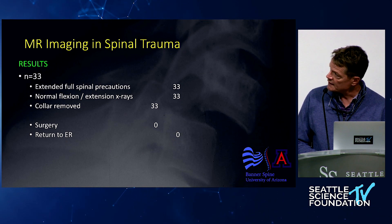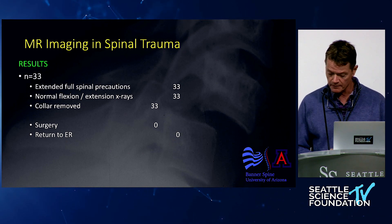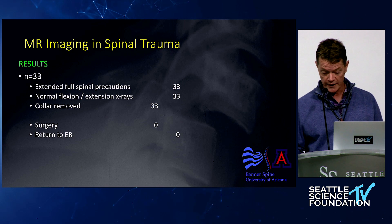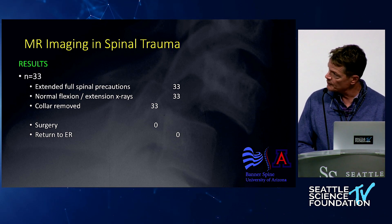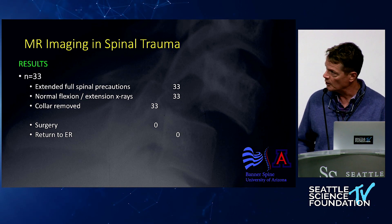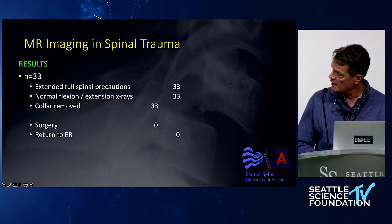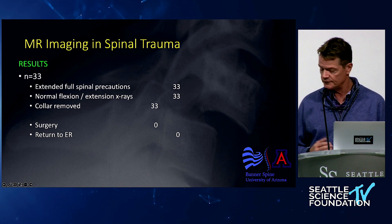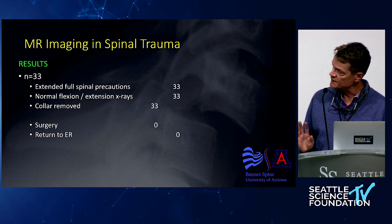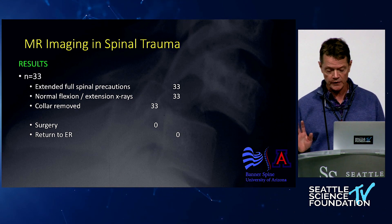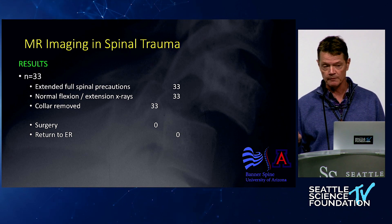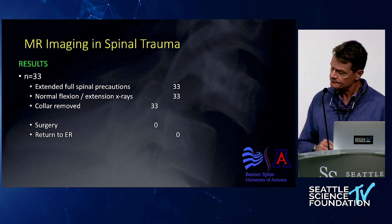All 33 patients were placed on extended full spinal precautions at the trauma team's request until our service could evaluate them. All 33 underwent flexion-extension X-rays, which were completely normal. All 33 had their collar removed, none went to surgery, and none returned to the ER during the two-year study period. This highlights a real issue if you're using radiologist MRI interpretations as your benchmark for operative decision-making.